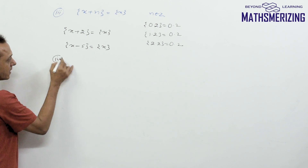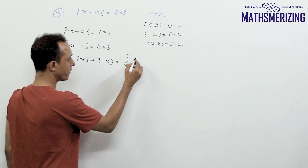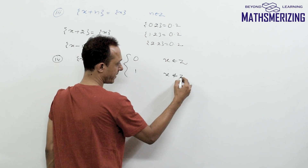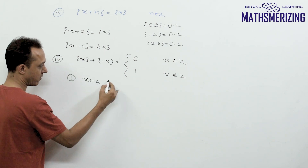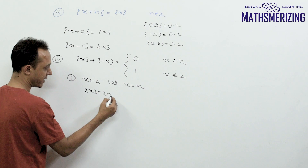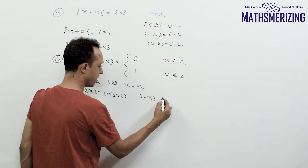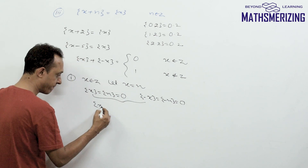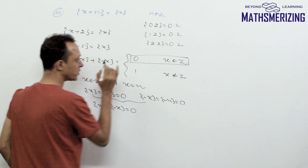The fourth property: {x} + {−x} equals 0 when x is an integer, and equals 1 when x is not an integer. For the first case, when x = n (an integer), {n} = 0 and {−n} = 0, so their sum is 0.